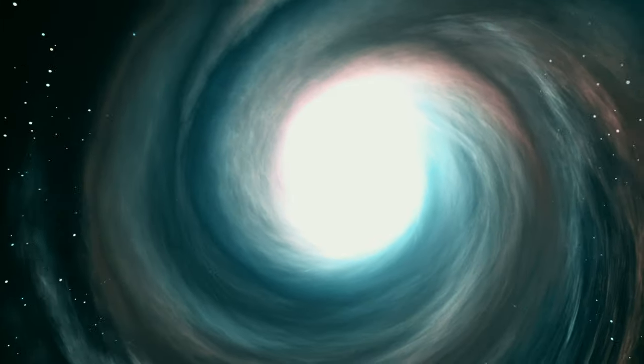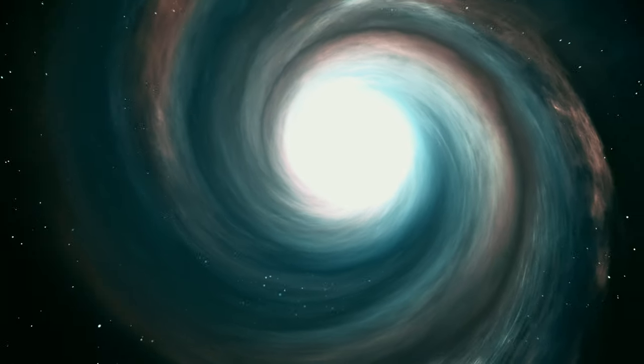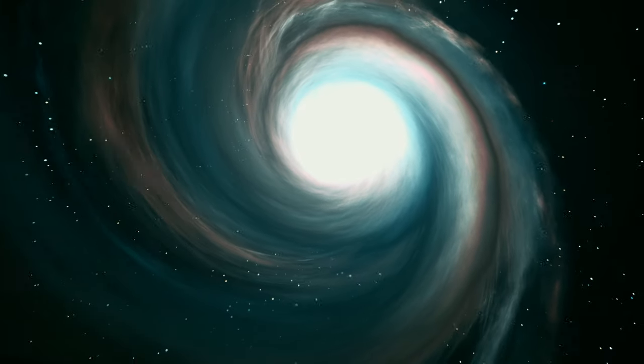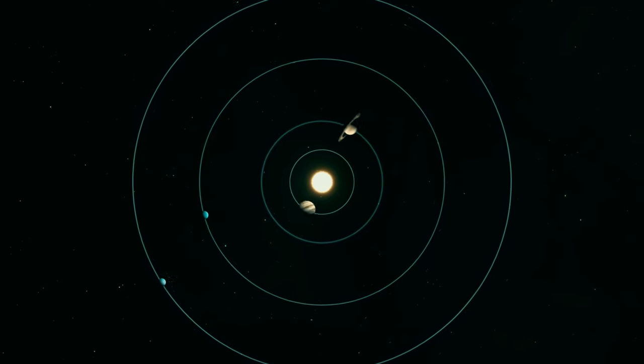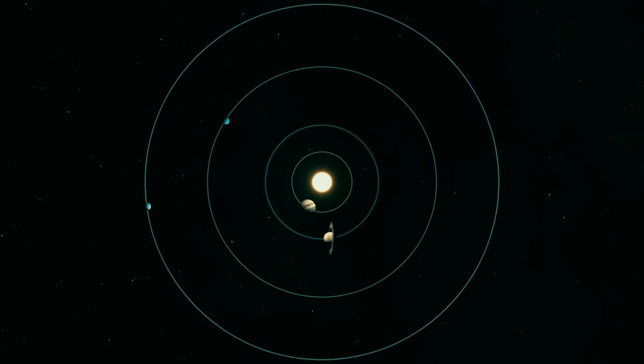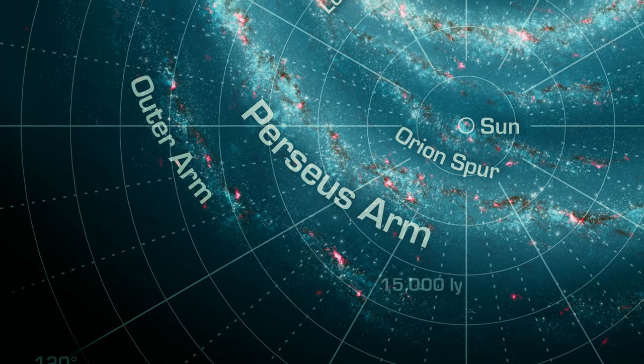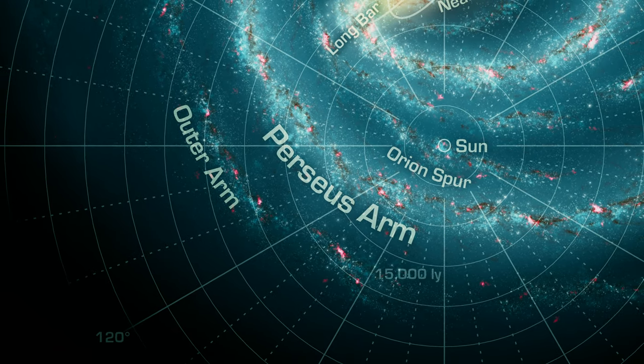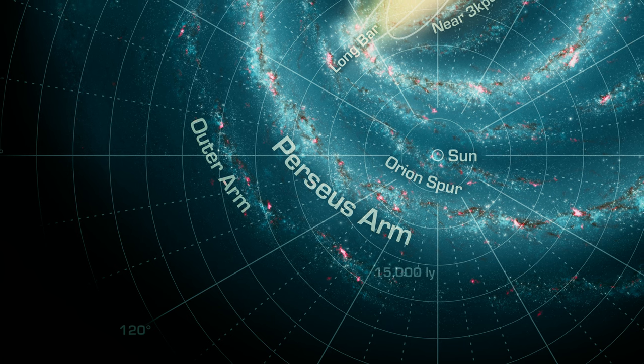The Milky Way is a spiral-shaped galaxy and measures at least a hundred thousand or more light-years across. Earth and its solar system are located two-thirds of the way from the center of the Milky Way in a region between the two arms called the Orion Cygnus Arm. That's 25,000 light-years from the center of the galaxy.